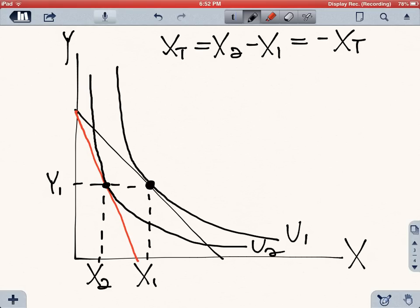Now we know that that change in consumption is made of two things, an income effect and a substitution effect. And the way we're going to separate those effects is simply by compensating the consumer for the income that the consumer lost for the purchasing power.